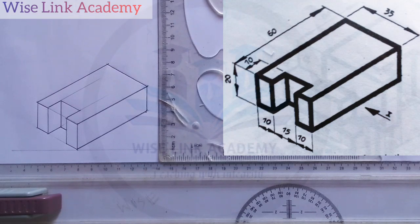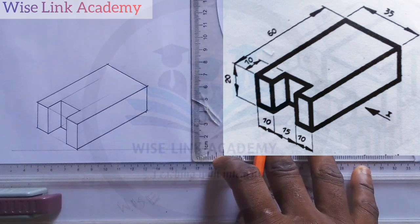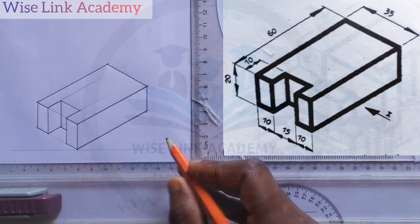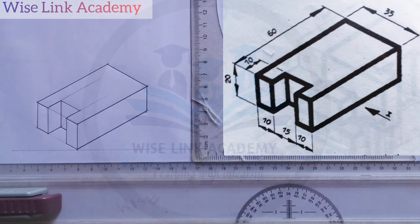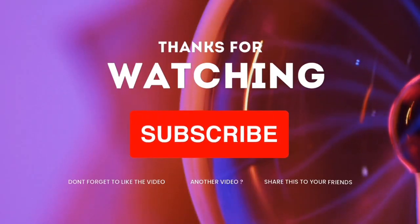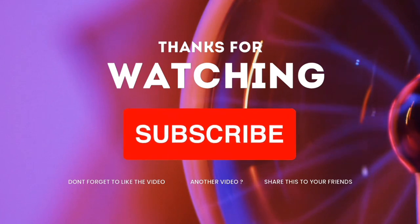So we have successfully reproduced the isometric you are seeing at the right corner of the screen to be what you are seeing in front of you. If you have found this class helpful, do not forget to click on the subscribe button and like. Thank you. Welcome to Excel Wise Link Academy. In the next class, we are going to be considering how to draw the orthographic projection of this figure in first angle projection.